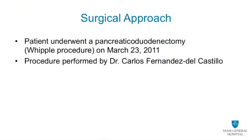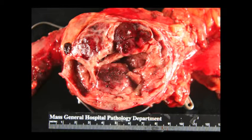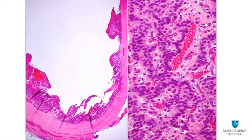The patient underwent a Whipple procedure in March of 2011. The resected specimen demonstrated a well-circumscribed mass with both solid and cystic components. The solid component is predominant, but in a circumferential nature around the cystic spaces, which created the thick cyst wall appearance on endoscopic ultrasound. Histologically, the tumor cells form cords and nests in both the solid component and outlining the cyst wall, with a similar morphological appearance on histology as on cytology and in the cell block.